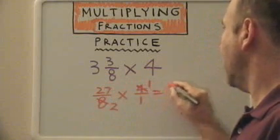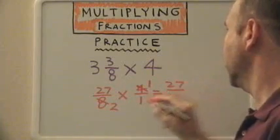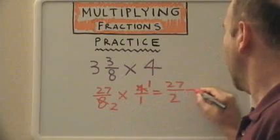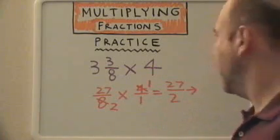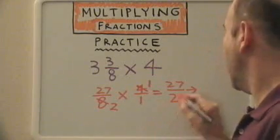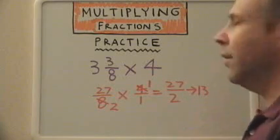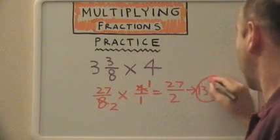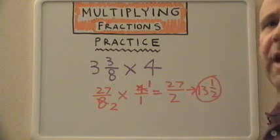Twenty-seven times one equals twenty-seven. Two times one equals two. Twenty-seven over two can be reduced. Two goes into twenty-seven thirteen times. There's one left over. For a final answer of thirteen and a half.